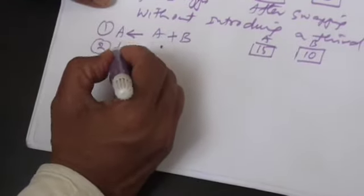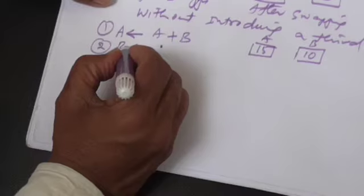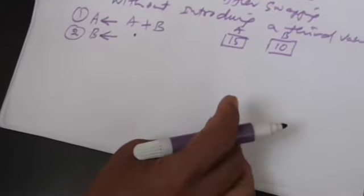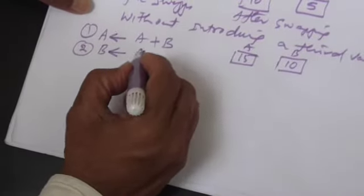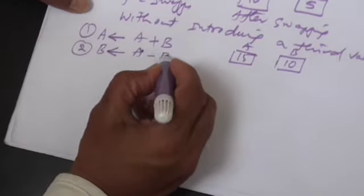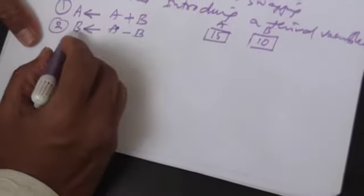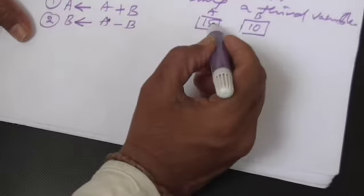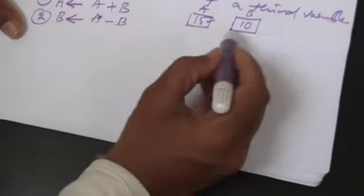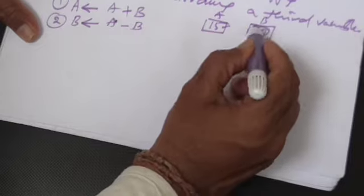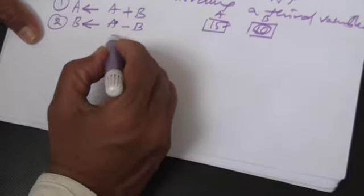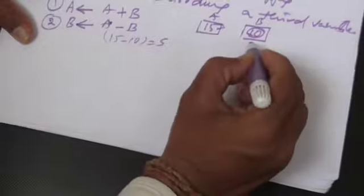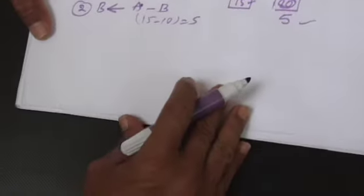As a second step, you write B is A minus B. The value present in A is now 15 and the value presently in B is 10, so 15 minus 10 gives a result of 5. So B now receives the value 5.